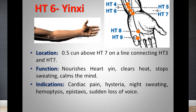Heart 6, Yinxi, is the xi-cleft point of the meridian. Xi-cleft points are used during acute emergencies. Location: 0.5 cun above the medial end of the transverse wrist crease. This point is used in acute emergencies such as night sweats, hysteric attacks, cardiac pain, angina, epistaxis, and sudden loss of voice.